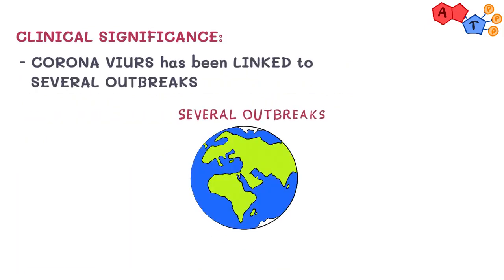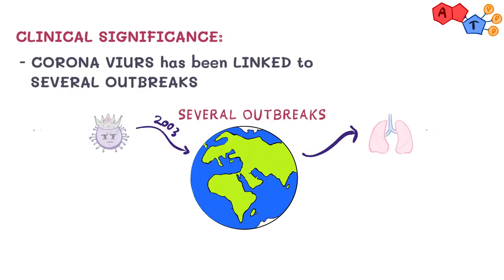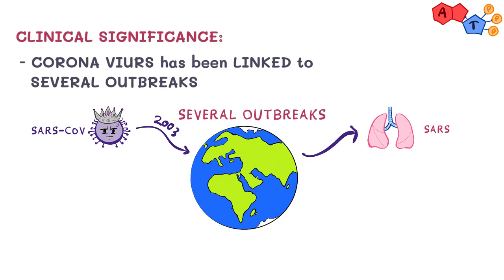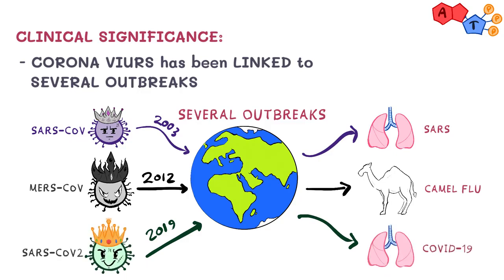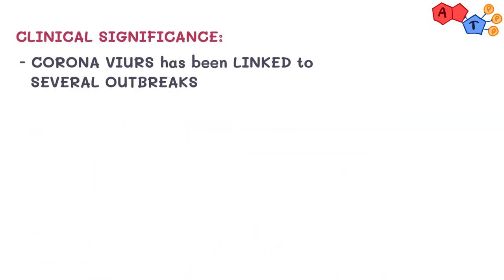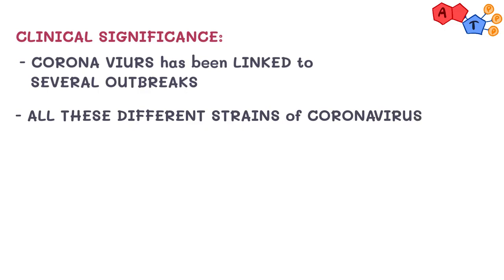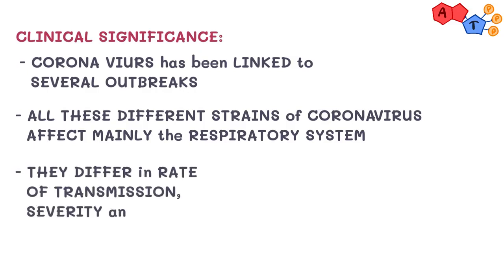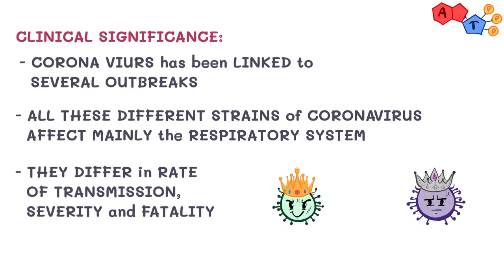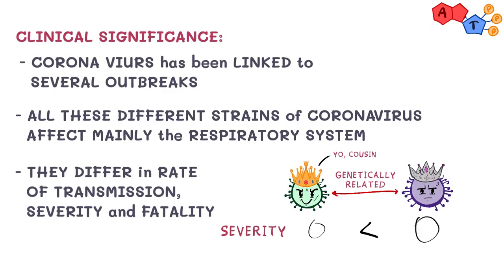Coronavirus has been linked to several outbreaks, not only the one we're experiencing right now. In 2003 we had SARS, caused by SARS-CoV. Then in 2012 we had MERS, also known as Camel Flu, caused by MERS-CoV. And right now, COVID-19 is caused by SARS-CoV-2. Its name is close to the virus that caused SARS in the past because SARS-CoV-2 is genetically related to SARS-CoV. All these strains affect mainly the respiratory system, but they differ in rate of transmission, severity, and fatality. For example, although SARS-CoV and SARS-CoV-2 are genetically related, SARS-CoV was more deadly but less infectious than SARS-CoV-2, which caused COVID-19.